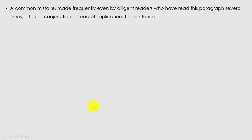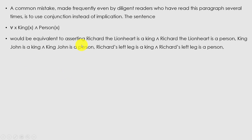A common mistake — even by diligent readers — is to use conjunction instead of implication. The sentence ∀x King(x) ∧ Person(x) would be equivalent to asserting: Richard the Lionheart is a king AND Richard the Lionheart is a person; King John is a king AND King John is a person; Richard's left leg is a king AND Richard's left leg is a person. This is too strong.